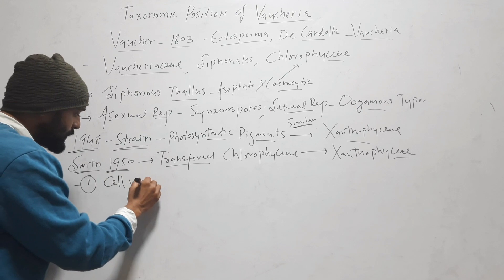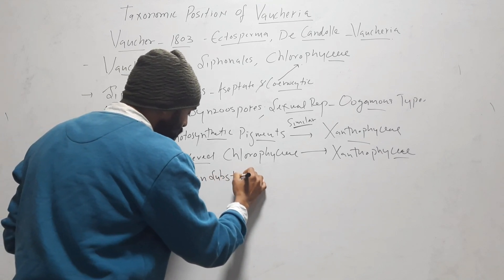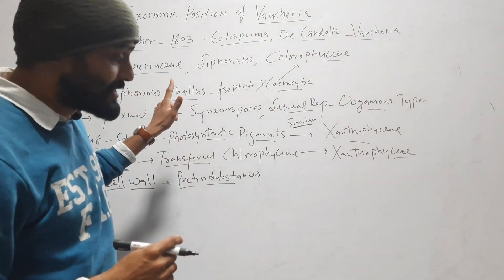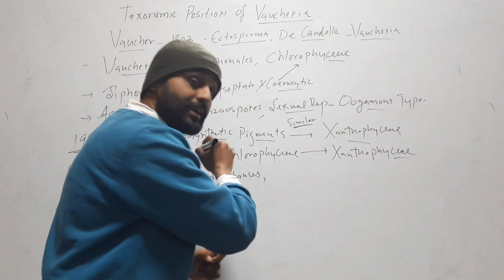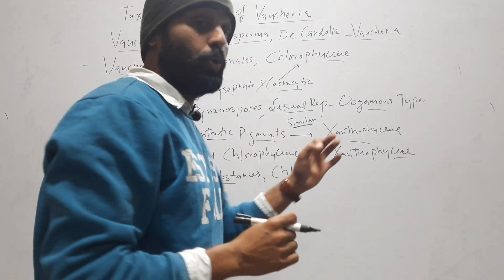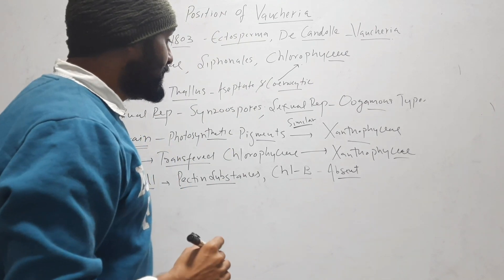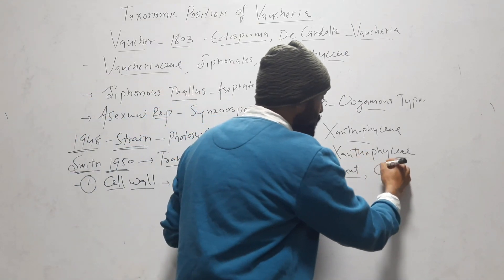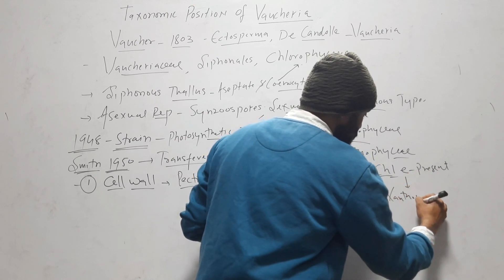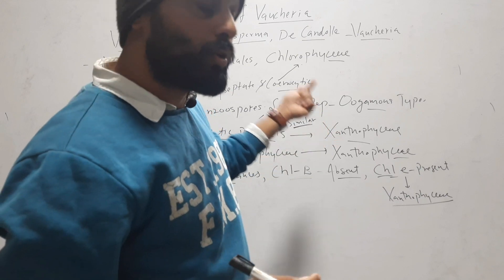The arguments Smith gave for this transfer were: first, the cell wall of Vaucheria is made up of pectin substances, whereas in Chlorophyceae the cell wall is always made up of cellulose. Second, chlorophyll b — the photosynthetic pigment found in all members of Chlorophyceae — is absent in Vaucheria. Instead, chlorophyll e is present, which is a characteristic feature of Xanthophyceae.